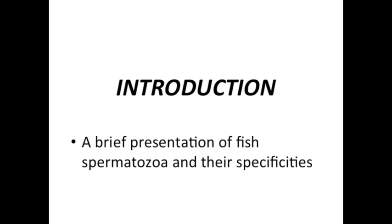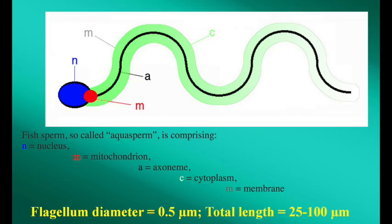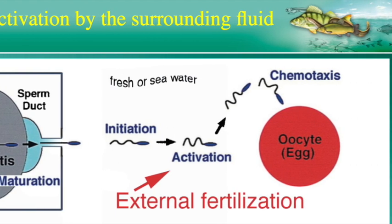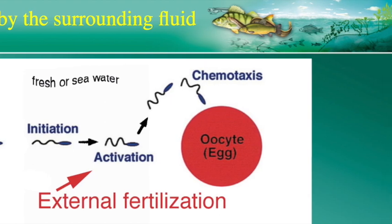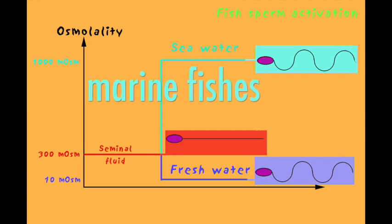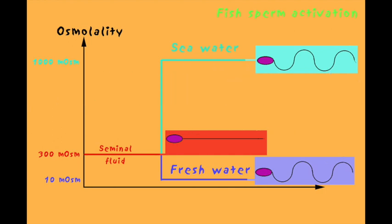Introduction: A brief presentation of fish spermatozoa and their specificities. Fish spermatozoa is a very simple cell comprising a head, a mitochondrion, and a flagellum about 100 micrometers long and 0.5 micrometers in diameter. Sperm motility activation of fish with external fertilization occurs when it is released into the surrounding fresh or marine water. Fish spermatozoa are very fast swimmers with velocity up to 250 micrometers per second and beat frequency of the flagellum up to 80 hertz, but their motility lasts very short, sometimes less than 30 seconds. Motility is activated by osmolarity, either upward in seawater or downward in freshwater.